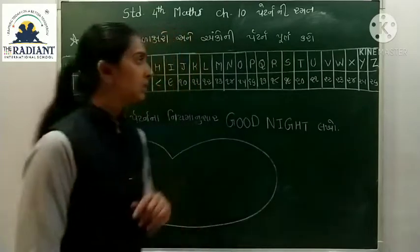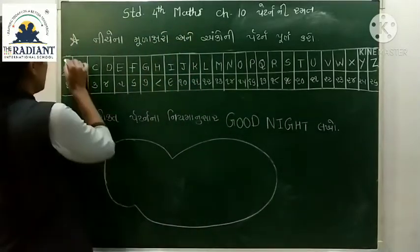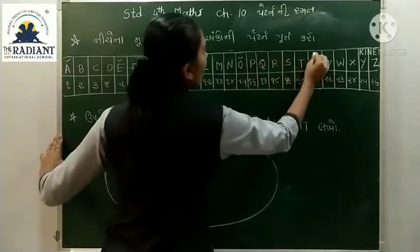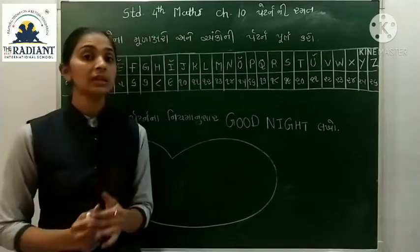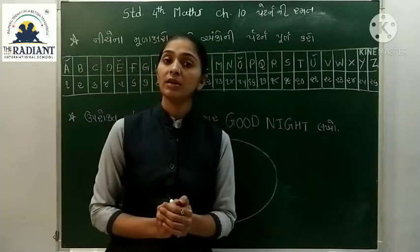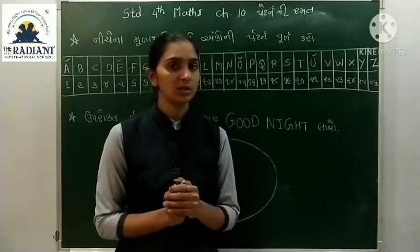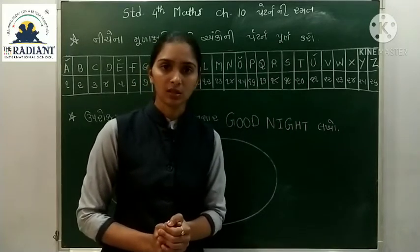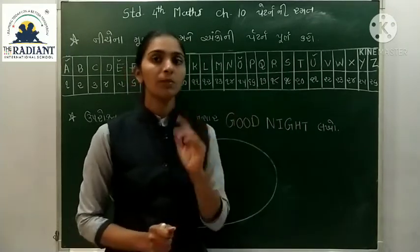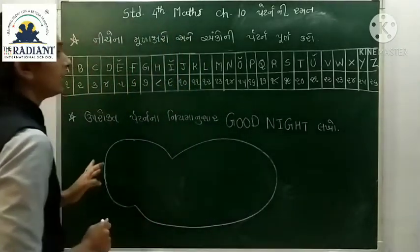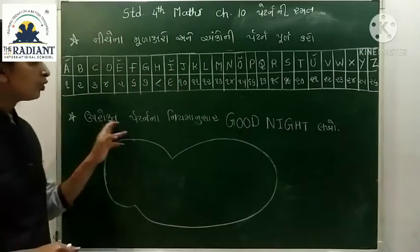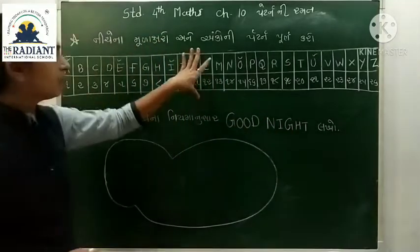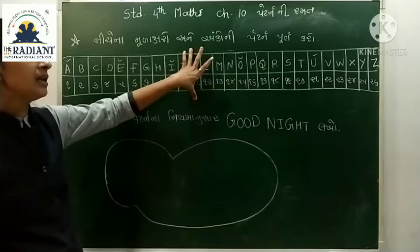અને 5 સ્વર. 5 સ્વર - A, E, I, O અને U - આ 5 જે મૂળાક્ષર છે તે સ્વર કેવાઈ છે.